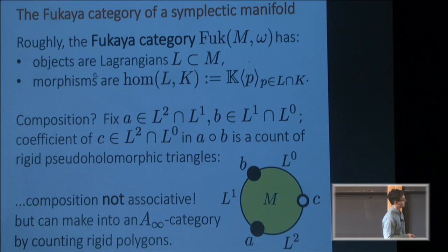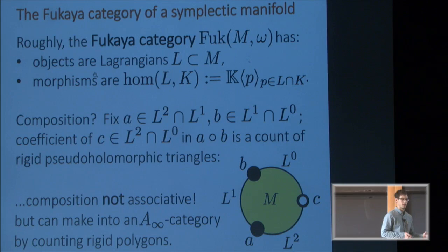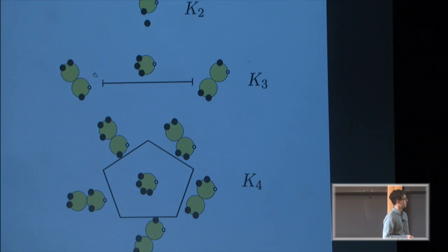This algebraic structure, called an A-infinity category, comes from the combinatorics of the moduli spaces of domains. Here's a picture of the first three of these moduli spaces of domains. Starting with the one relevant to the binary operation, called k2, we consider all configurations of three marked points on the boundary of the disk up to complex automorphism. And of course, there's just one of them. So k2 is a single point.